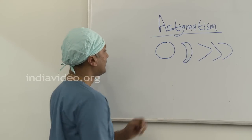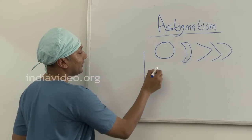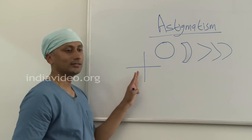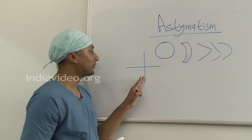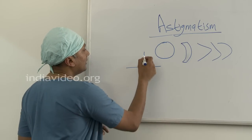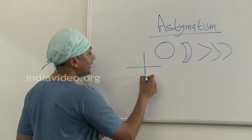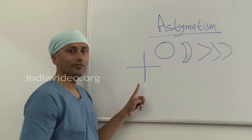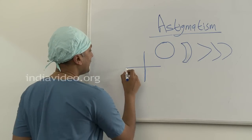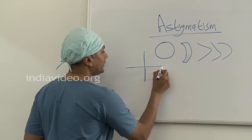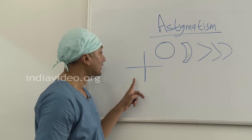then either the vertical meridian or the horizontal meridian has a change in refractive power. For example, the vertical meridian can have normal vision and the horizontal meridian can have short sight or long sight.